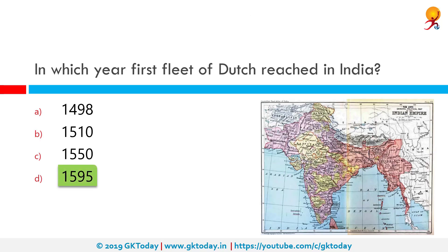In which year did the first fleet of the Dutch reach India? The correct answer is 1595. However, the actual Dutch presence on the Indian subcontinent lasted from 1605 to 1825. Merchants of the Dutch East India Company first established themselves at Dutch Coromandel, notably Pulicat, as they were looking for textiles to exchange with the spices they traded in the East Indies.